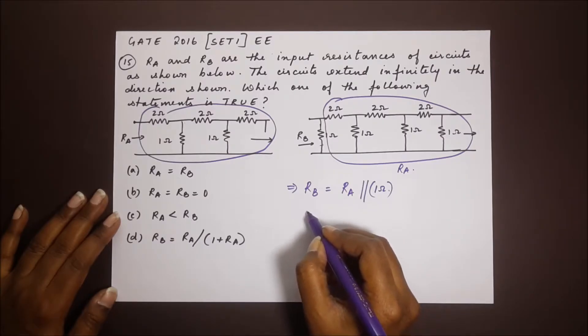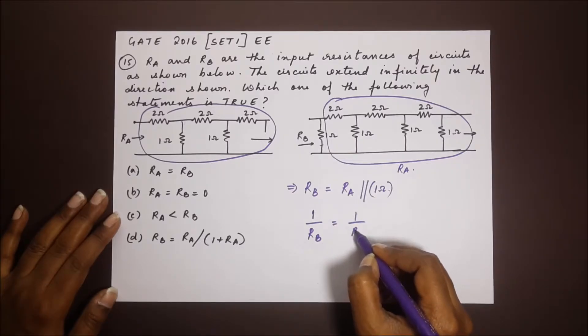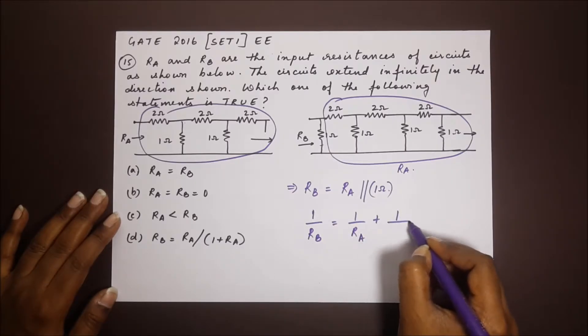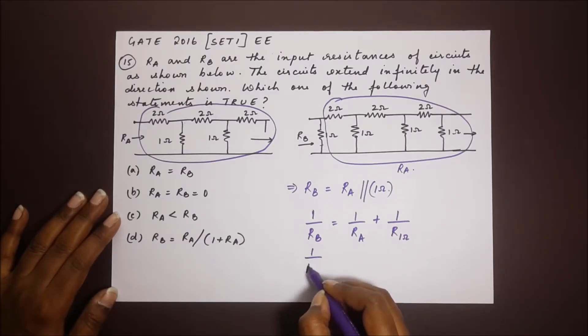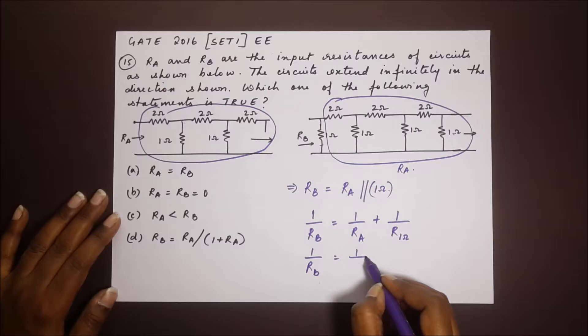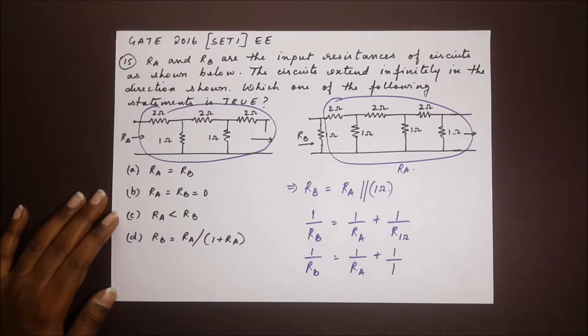And to solve this, we know that one by RB is equal to one by RA plus one by one. So if we solve this, we solve it for RB. Let's solve and see. Let me just take another sheet of paper here.